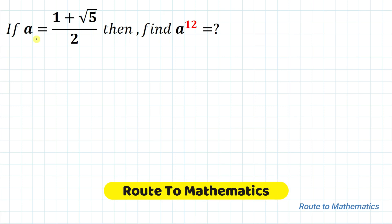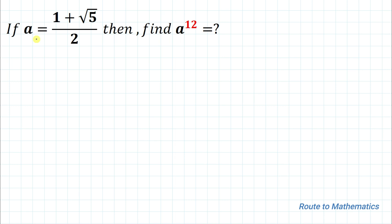Hello everyone, welcome to Root 2 Mathematics. In this video we are going to solve this interesting problem. Here we have given a equals to 1 plus root 5 divided by 2, then find the value of a to the power 12. This value is also known as the golden ratio.